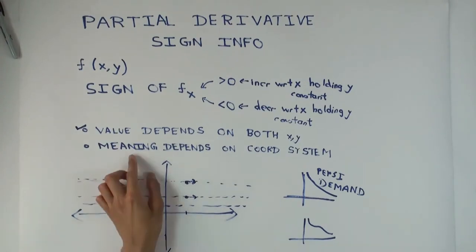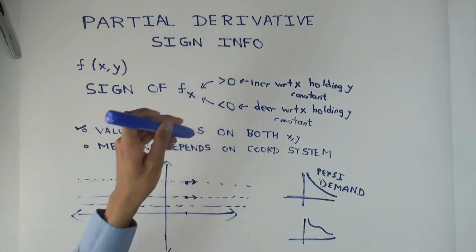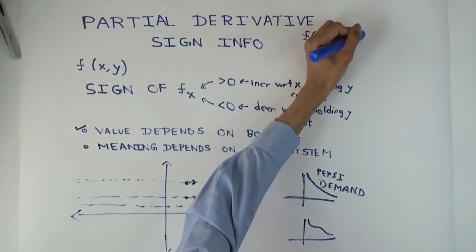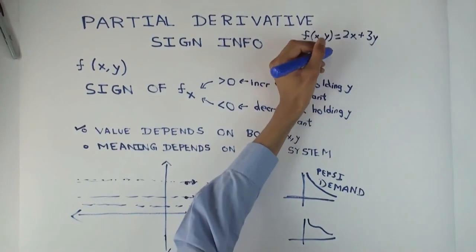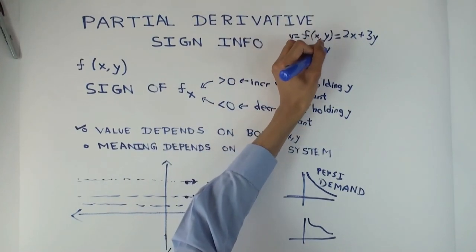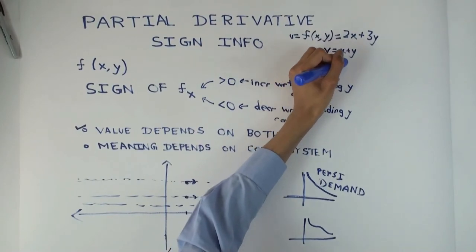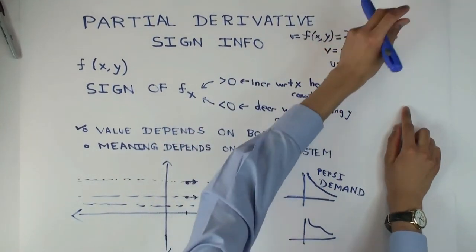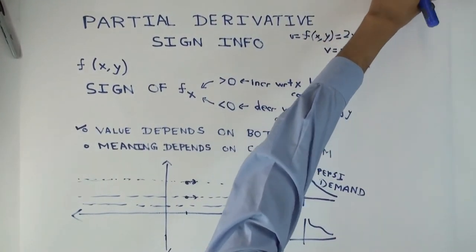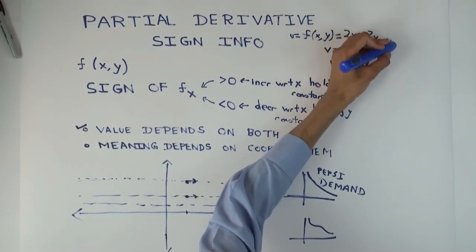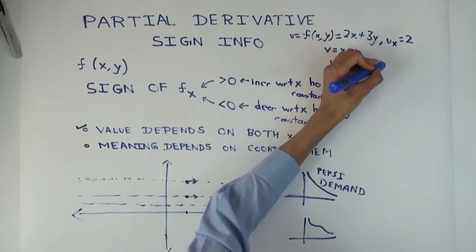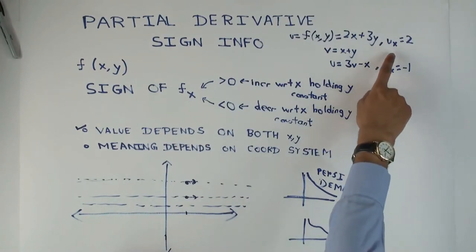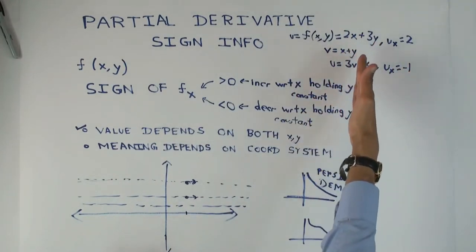The meaning of the partial derivative depends on the coordinate system. We had an example where if I put v as x plus y, then u becomes 3v minus x. In the original, the partial derivative is 2, and now the partial derivative is negative 1. So the partial derivative value changes depending on what you're holding constant — are you holding y constant or v constant?